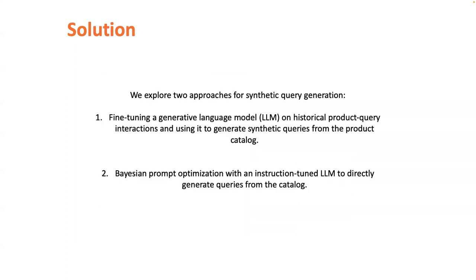We primarily explore two approaches for synthetic query generation. The first is fine-tuning a generative LLM on historical product-query interaction data and using it to generate synthetic queries from the product catalog. The second is Bayesian prompt optimization with an instruction-tuned LLM to directly generate queries from the catalog. The first approach is particularly useful when model weights are accessible, while the second is useful when we only have API-like access and can only prompt the model.